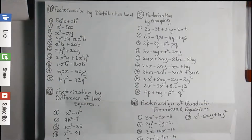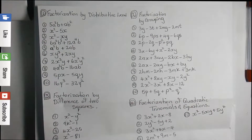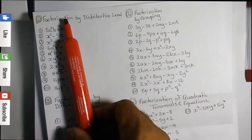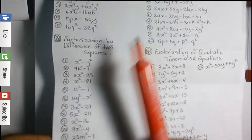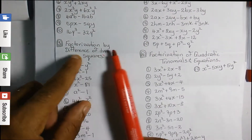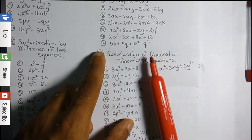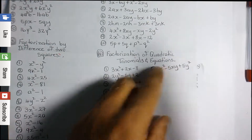In this video we have four different types of factorization to complete: factorization by distributive law, factorization by grouping, factorization by difference of two squares, and factorization of quadratic trinomial expressions and equations.